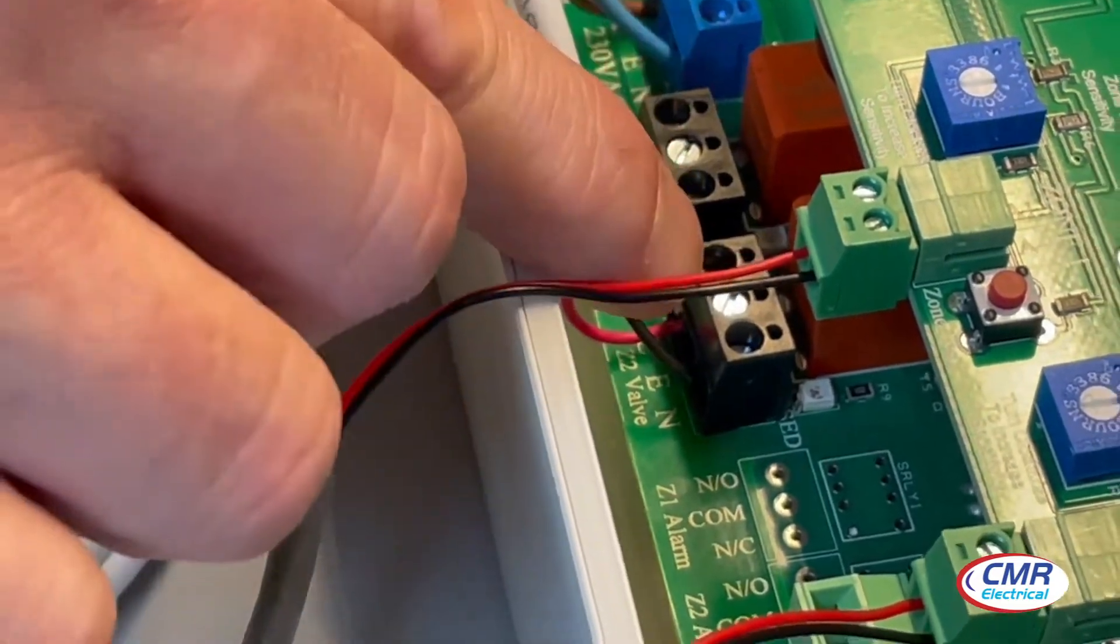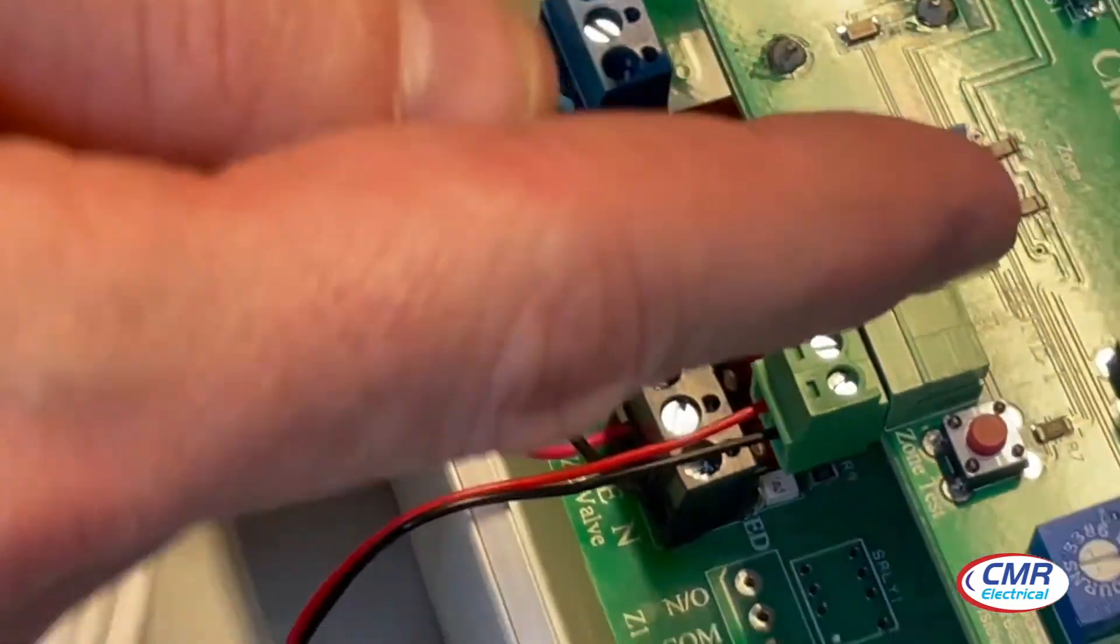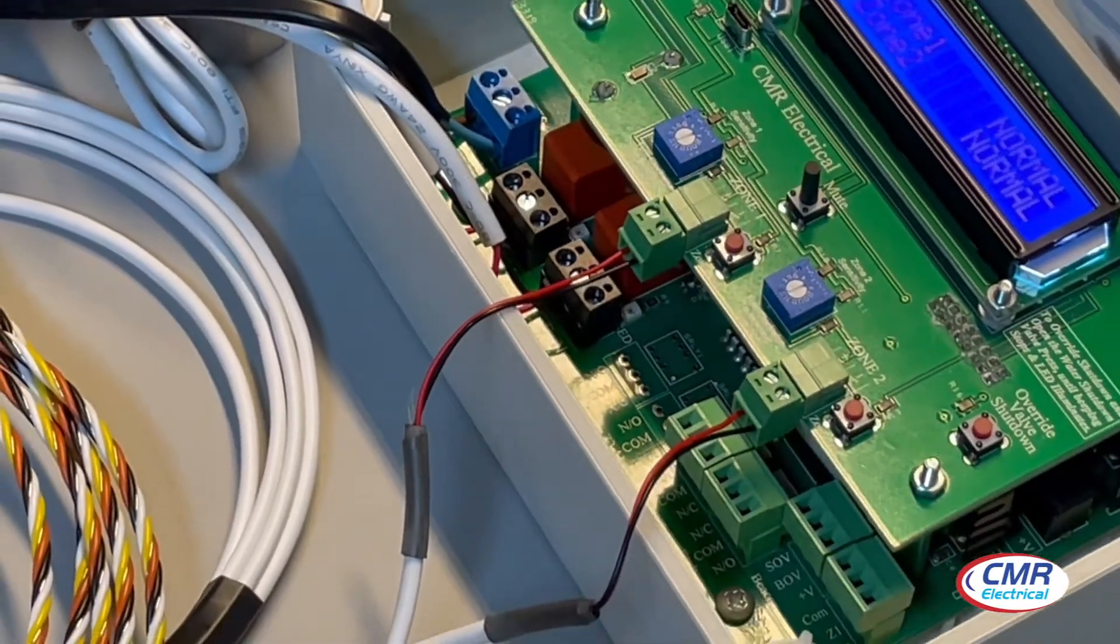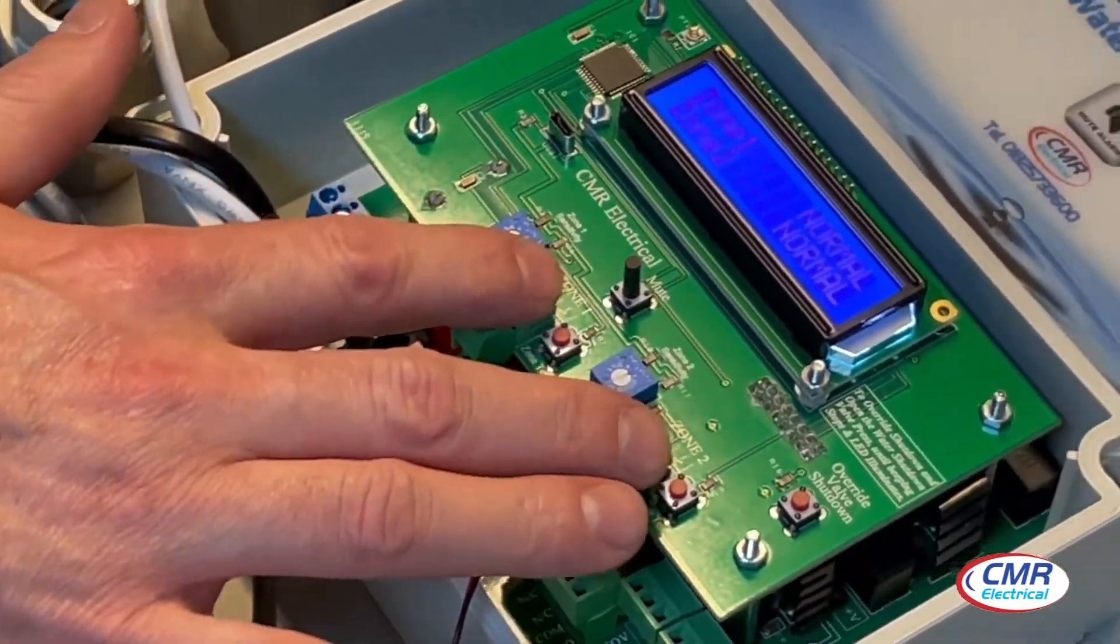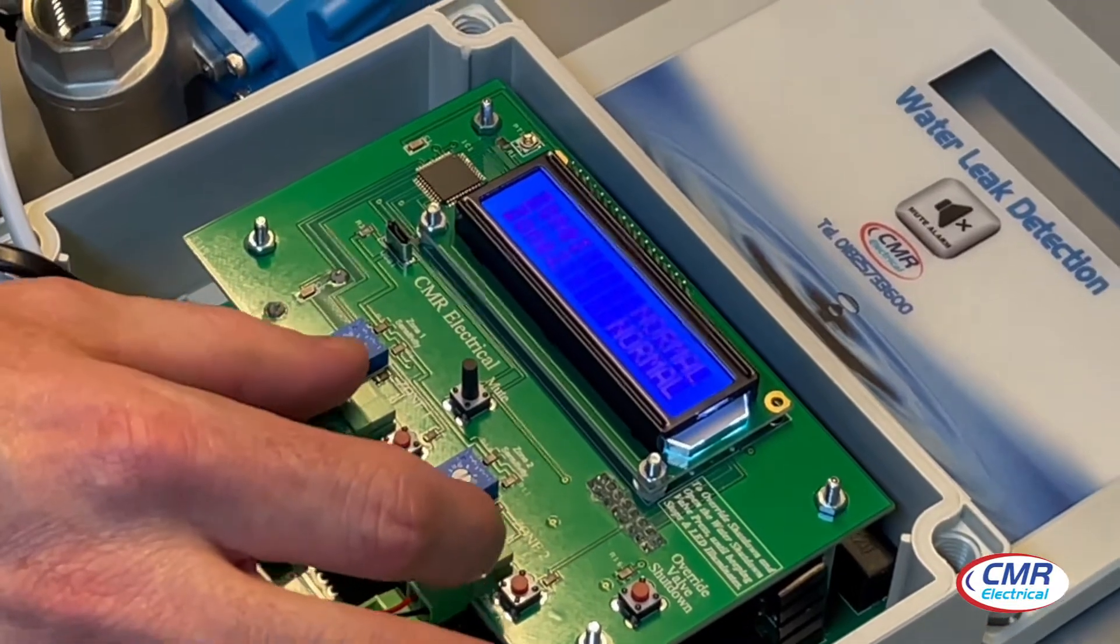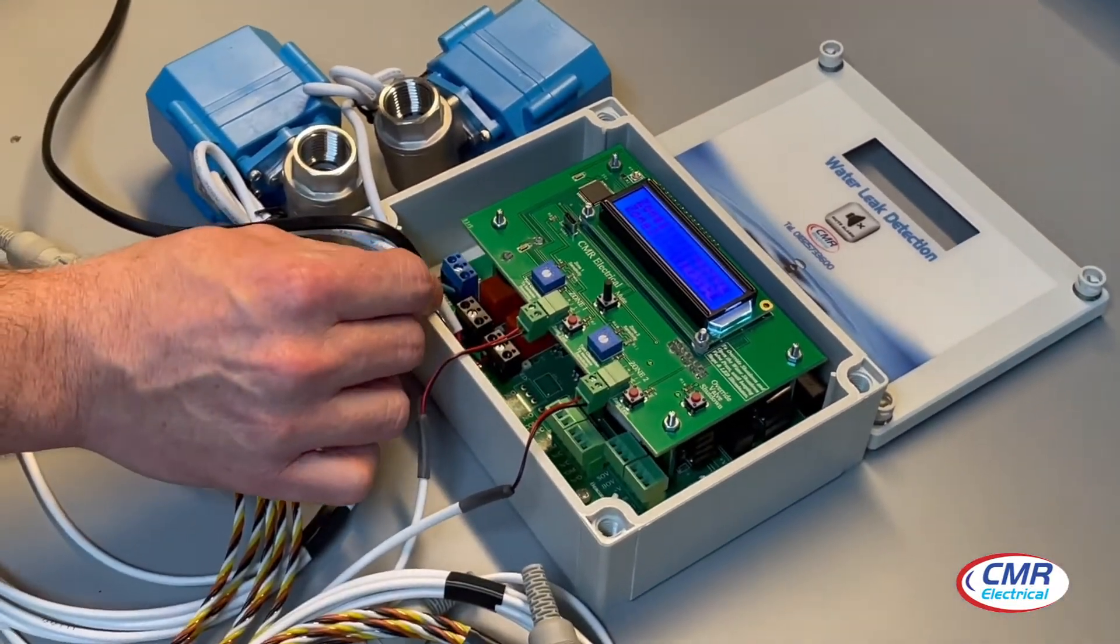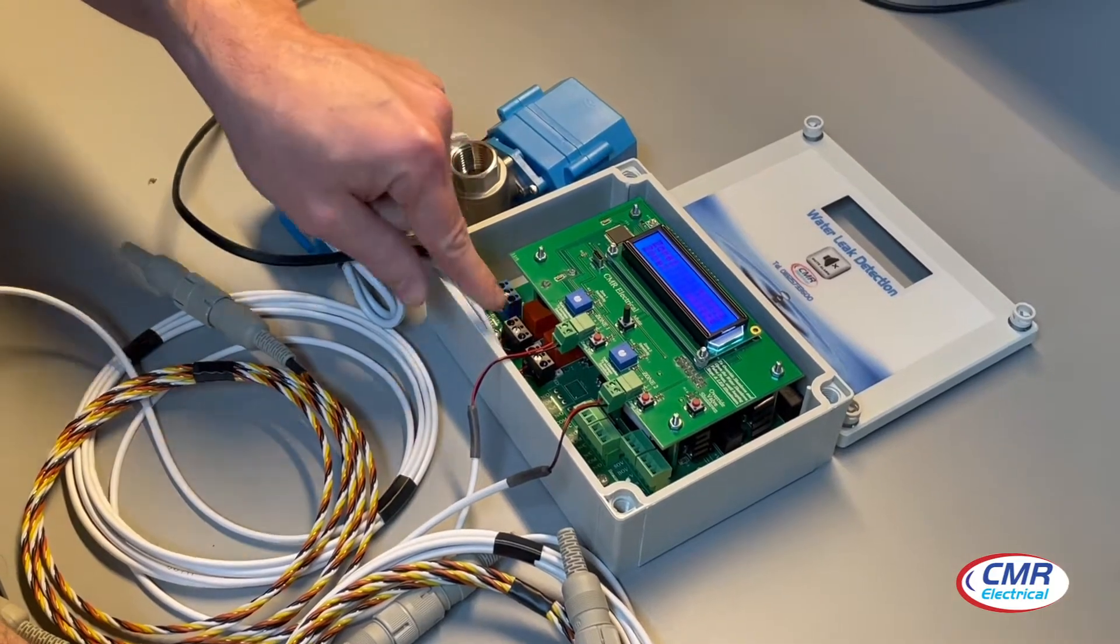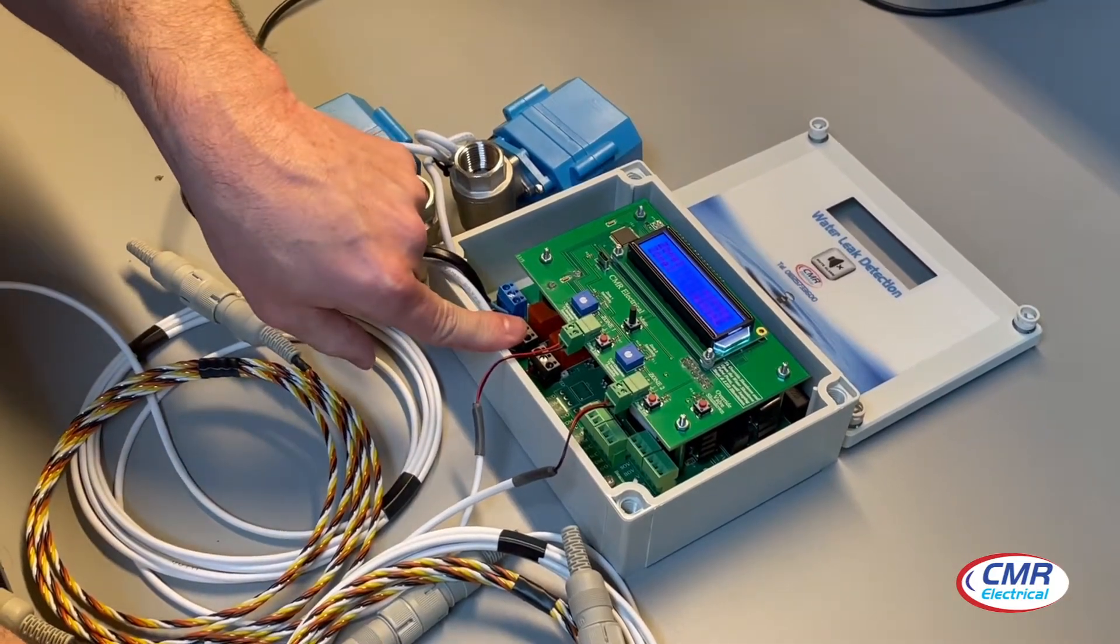Your two terminals here will be individual zone valve control per zone, or you can have common valve control, which means if you have a two-zone system, any of those two zones going into alarm will turn off a valve. As you can see down there, you've got your live, earth, and neutral. Exactly the same for the second zone.